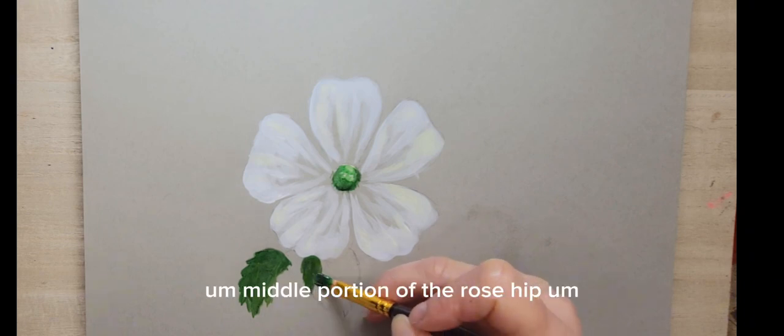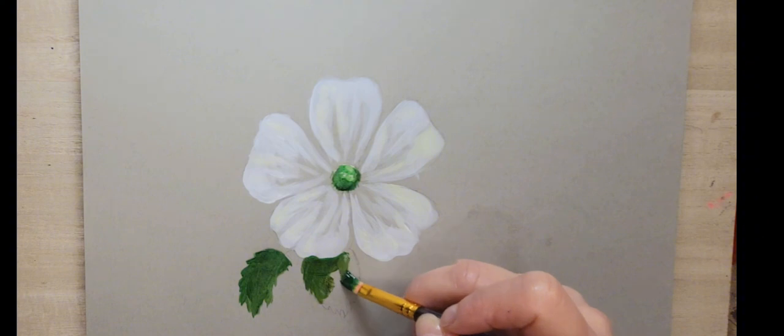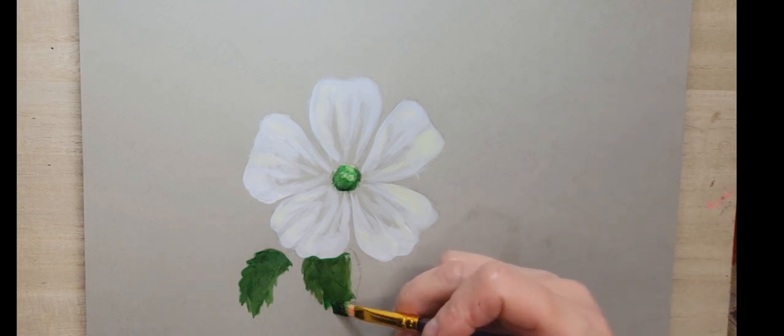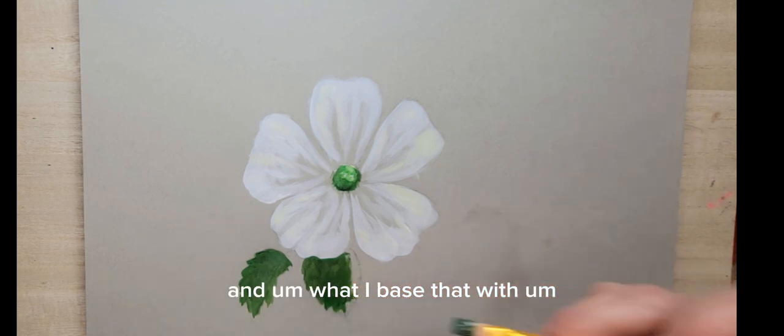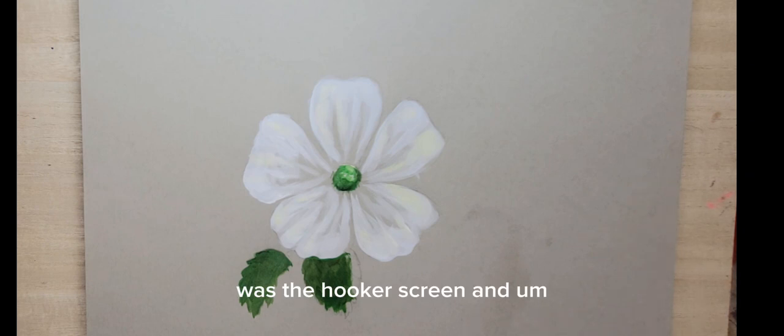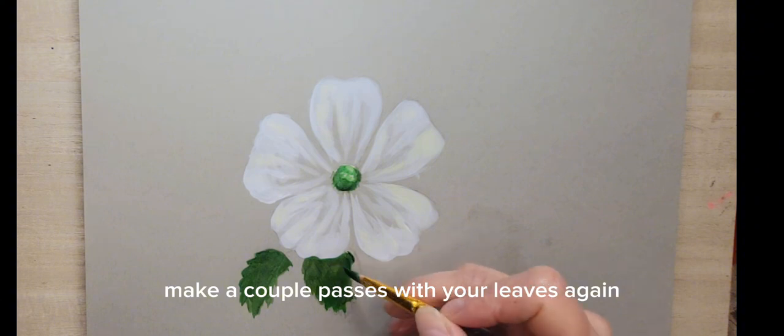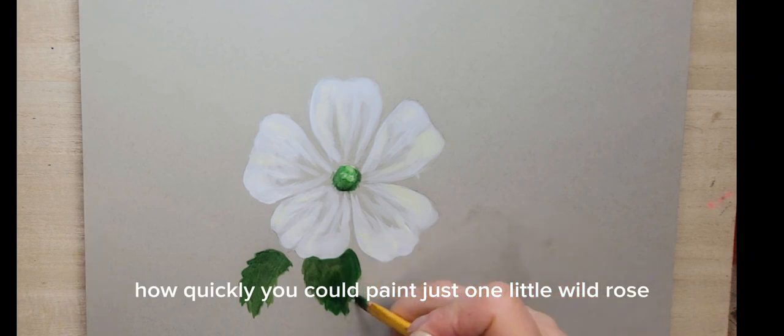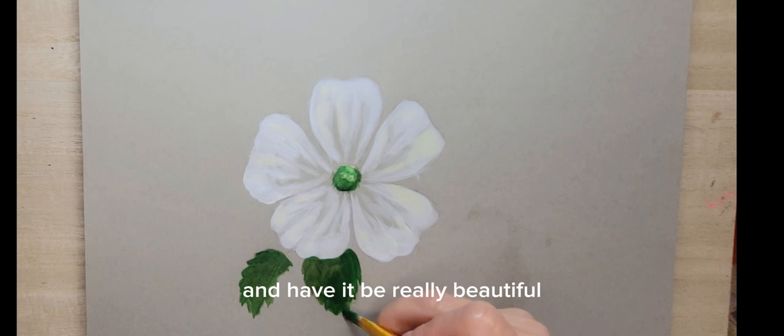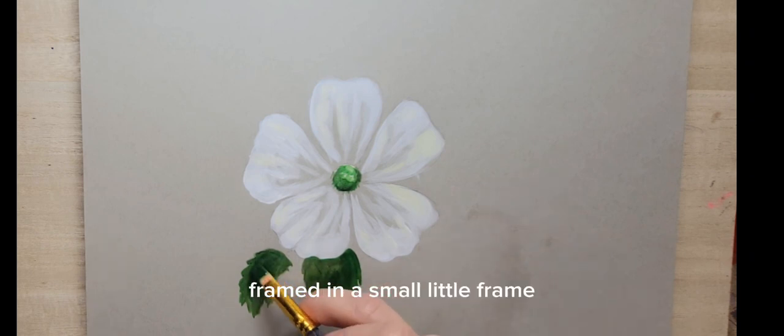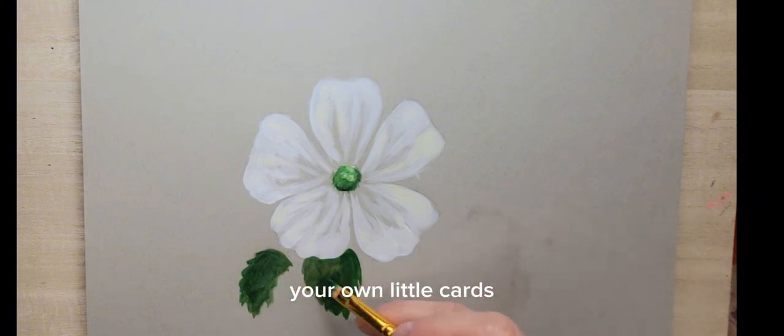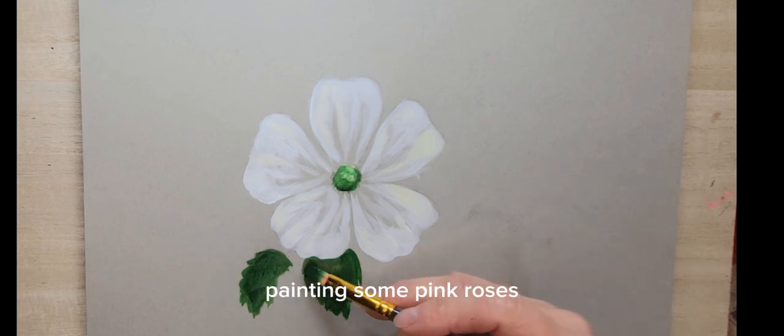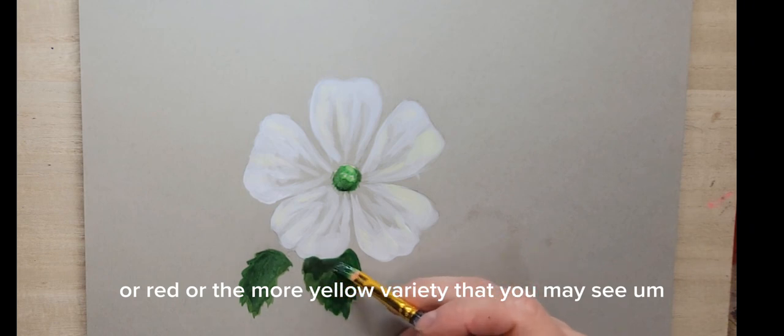I'm base coating the leaves now. I only added two little leaves to this flower and I based that with hooker's green. You can just make a couple passes with your leaves. Again, this is a really quick tutorial to show you how quickly you could paint just one little wild rose and have it be really beautiful. This would be beautiful framed in a small little frame. You could make your own little cards with just a simple rose, and then you could vary the rose by painting some pink roses or red or the more yellow variety.